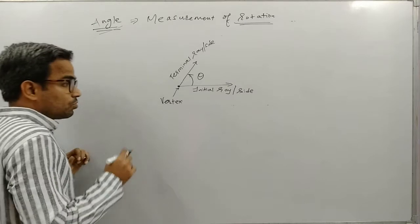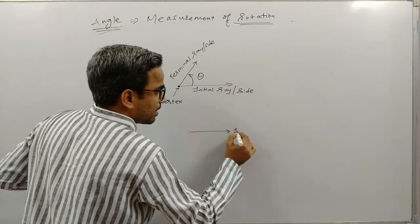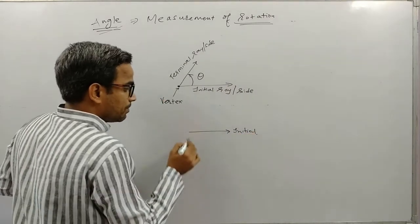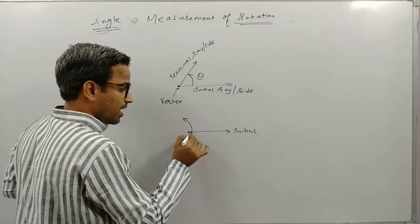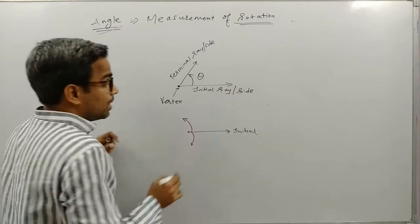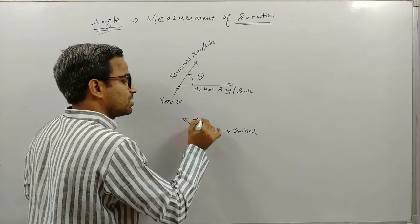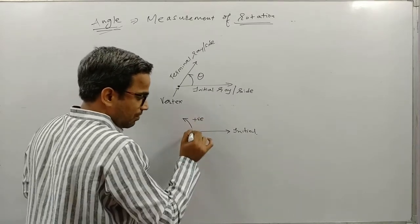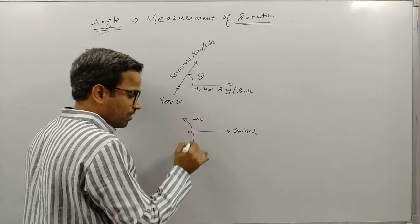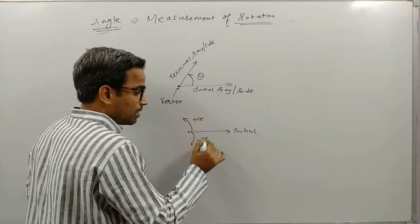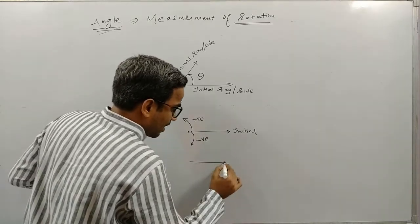Now how do we measure it? When we rotate the initial ray, we can rotate in the anti-clockwise sense or in the clockwise sense. When we rotate in the clockwise sense, we consider that rotation angle to be a negative value.